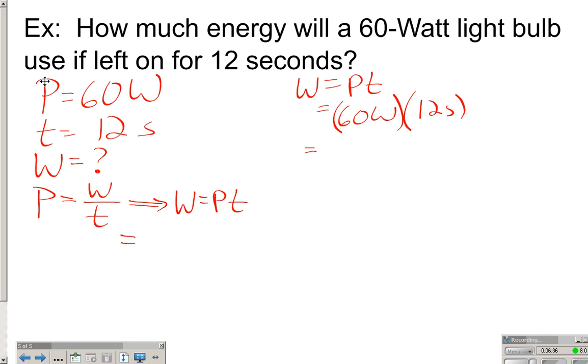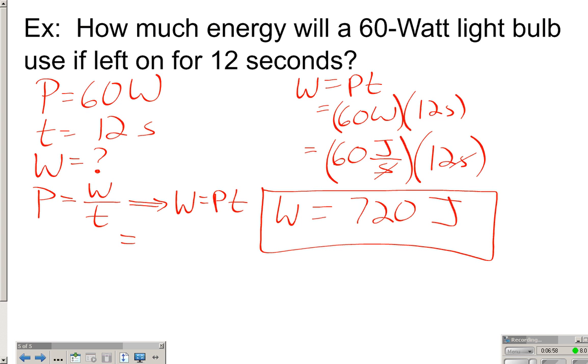Well, remember, you guys, a watt is a joule per second. So this is really 60 joules per second that the light bulb is using. For 12 seconds, the seconds cancel out, and you're going to be just left with joules. So 60 times 12 is 720, and you do, in fact, get joules. So that's how much energy our light bulb uses. 60 watt light bulb if it's left on for 12 seconds will use 720 joules worth of energy.